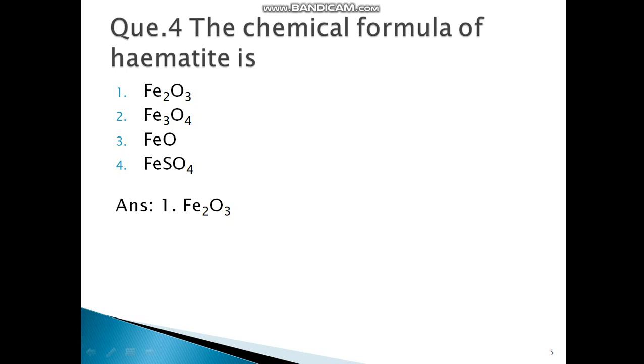Next question: The chemical formula of hematite is? First option Fe2O3, Fe3O4, FeO, FeSO4. The correct option is Fe2O3. Fe3O4 is for magnetite, and for hematite it is Fe2O3.